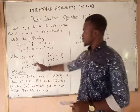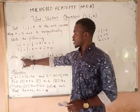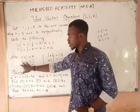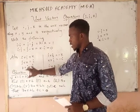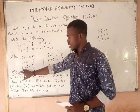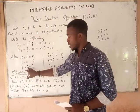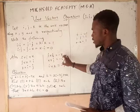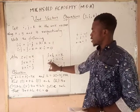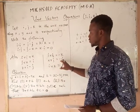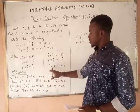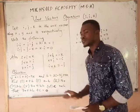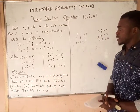For the cross product, we have: i cross j is equal to k, and j cross k is equal to i, and k cross i is equal to j. Then we have j cross i is equal to minus k, and k cross j is equal to minus i. Then we have i cross k is equal to minus k.